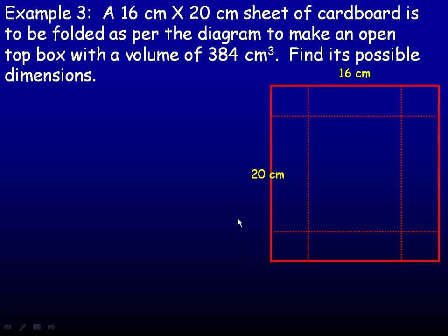For example 3, we have a 16 by 20 cm sheet of cardboard, and we're going to cut squares out of the corners, equal size squares of course, and fold up the four sides and make an open top box.